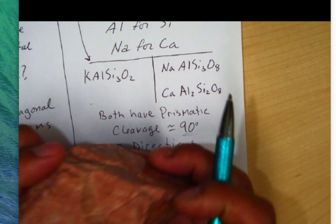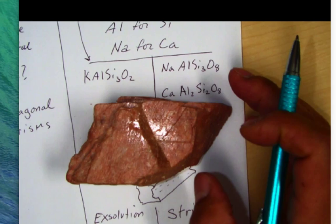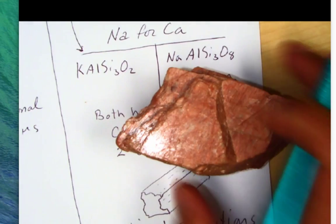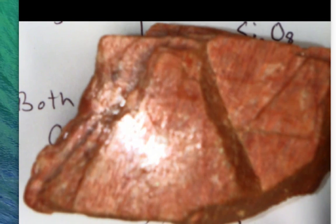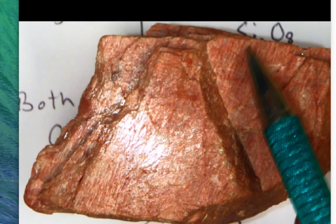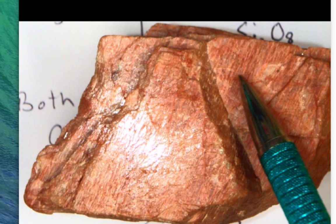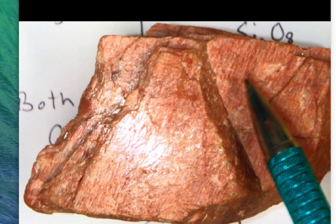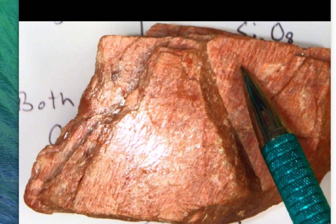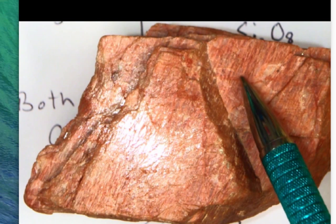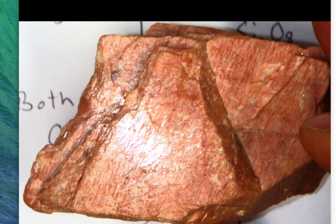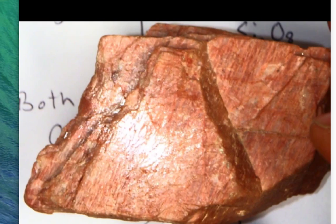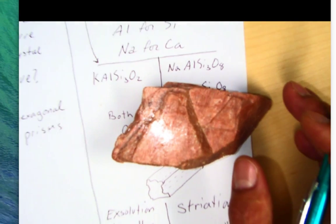Another interesting thing that potassium feldspar has — if we zoom in close — is these things called exsolution lamellae. The lamellae are like little veins running through here. It's because there's some quartz mixed into the formula; it's a framework mineral with a little bit of quartz that's trying to separate from the actual feldspar mineral. So we call that exsolution lamellae — like veins that occur within the crystal structure.